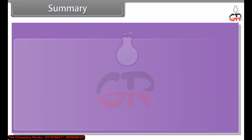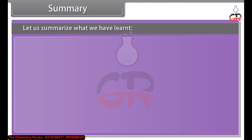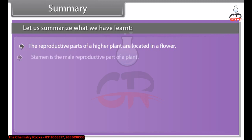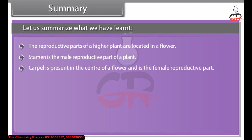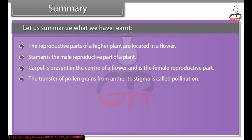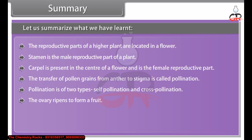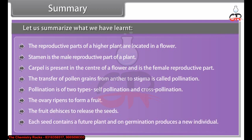Summary: The reproductive parts of a higher plant are located in a flower. The stamen is the male reproductive part and the carpel, present at the center of the flower, is the female reproductive part. The transfer of pollen grains from anther to stigma is called pollination, which is of two types: self-pollination and cross-pollination. The ovary ripens to form a fruit, which dehisces to release seeds. Each seed contains a future plant and on germination produces a new individual.